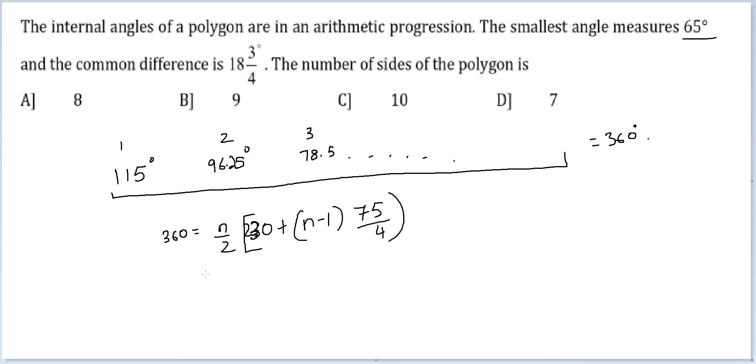Now you can solve this quadratic equation, but I'm favoring putting in options because they're given. I see (n-1) times 75 by 4 should be a nice number.